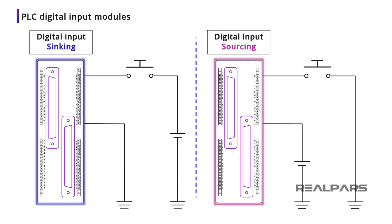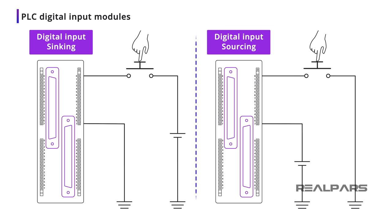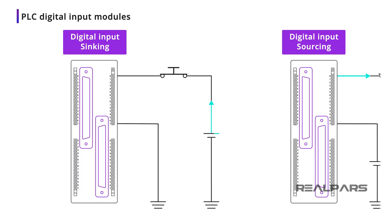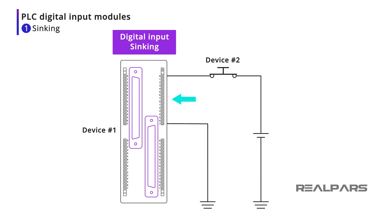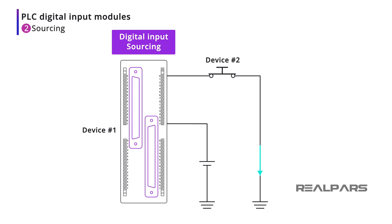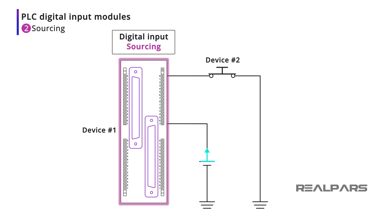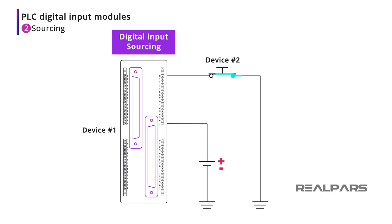PLC vendors manufacture both sinking and sourcing digital input modules. Let's explore what they are and how they differ. Remember, it's all about the direction of conventional current flow. Let's have a look at two devices with current flowing between them — one device is a PLC input module and the second device is a push-button switch. Based on the connection polarity, the sinking module will have the current flowing into it from the switch. Now, if our PLC input module is a sourcing module, based on the connection polarity, the sourcing module will have the current flowing out of it.